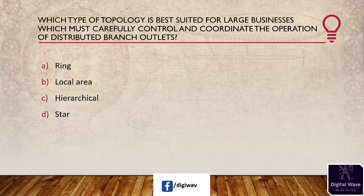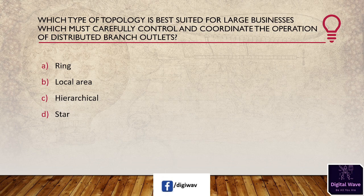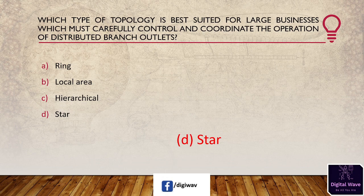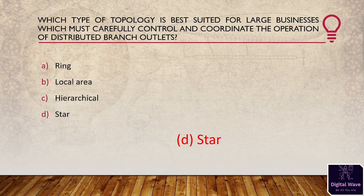Next question: which type of topology is best suited for large businesses which must carefully control and coordinate the operation of distributed branch outlets? Options are: ring, local area, hierarchical, star. The answer is star. The star topology is the best network topology for large businesses because it is simple to control and coordinate from the central computer.